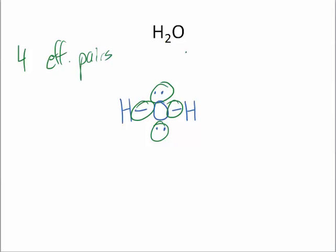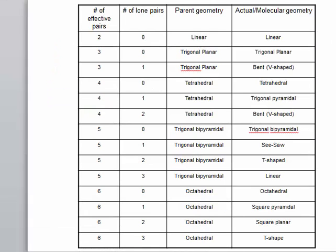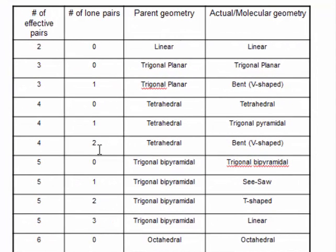But you also see that you have two lone pairs. So again, we look at our chart to understand what the structures are. So four effective pairs and two lone pairs. The parent geometry is tetrahedral, but the actual geometry is bent or V-shaped.